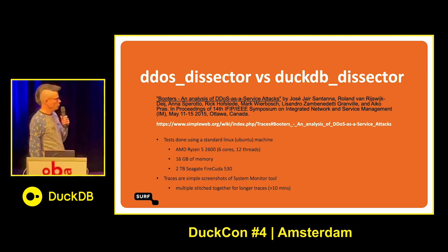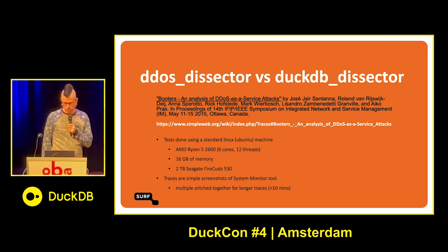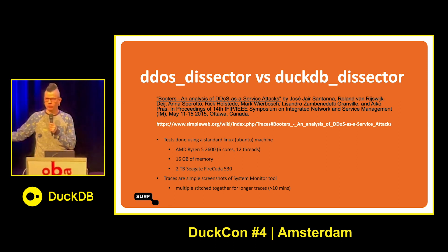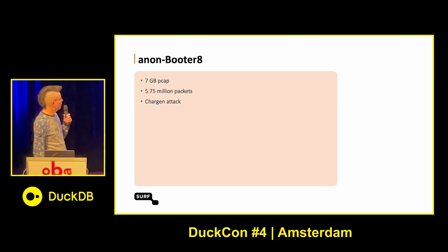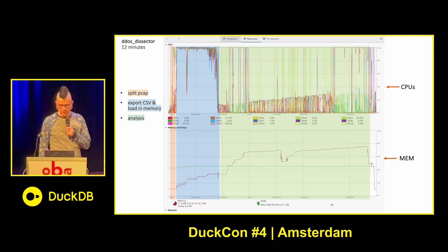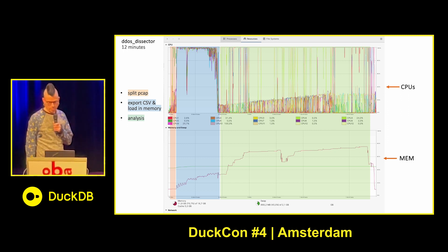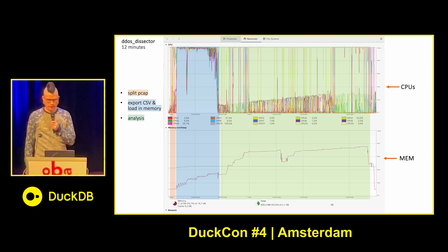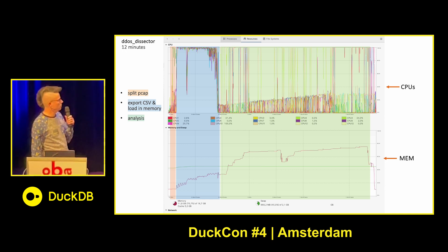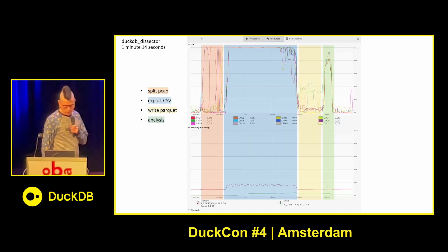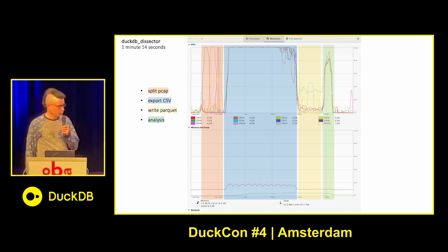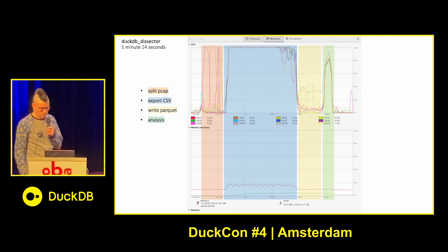I thought it would be nice to show you the effects. I used a booter dataset provided by the University of Twente — basically they fire DDoS attacks at themselves and record the results, which gives you a nice dataset. This dataset has nearly 6 million packets. With the original tool, you can see CPU utilization at the top and memory at the bottom. The data frame processing is single-threaded and takes a long time — memory usage goes up to about 75% and it takes about 12 minutes. With the DuckDB version, it takes about 1 minute 14 seconds. The analysis is quite a bit faster and memory usage is essentially non-existent.